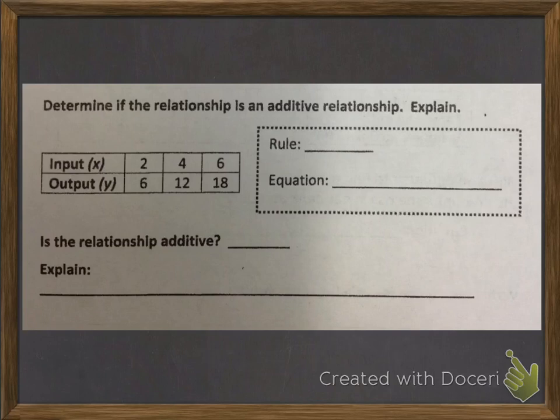So let's see what the rule here is. Well, 2 times 3 equals 6, 4 times 3 equals 12, and 6 times 3 equals 18. So here the rule is 3 times x, or 3 times the input. That means our equation is y equals 3x.